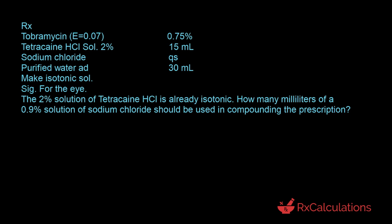There are some important things to pay attention to. The concentration of turbomycin is 0.75%. The 15 ml tells you the tetracaine hydrochloride solution is already isotonic — that's very important. The total volume is 30 ml. The preparation is hypotonic, so you want to adjust tonicity using sodium chloride. Instead of using solid sodium chloride, you're going to use a 0.9% solution of sodium chloride to supply the sodium chloride needed.